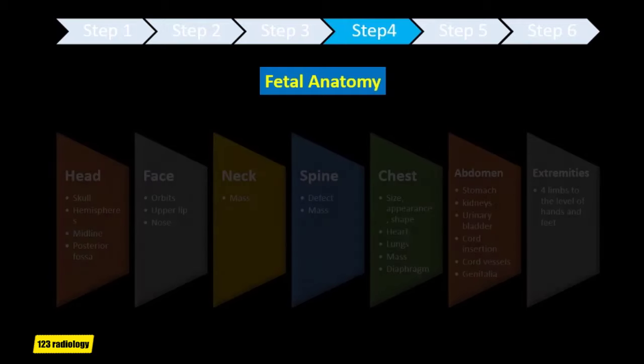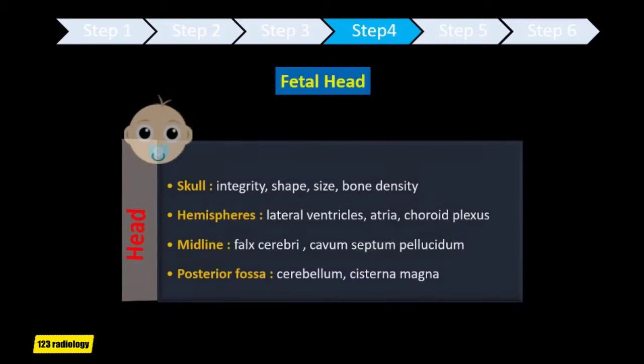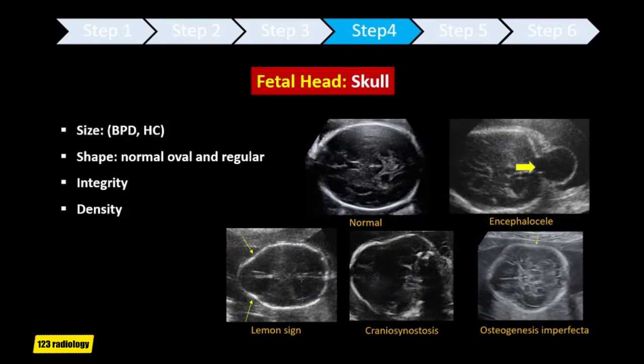Fetal anatomy survey includes the head, face, neck, spine, chest, abdomen, and extremities. For the fetal head, you look at the skull, the hemispheres, the midline, and the posterior fossa. The shape of the fetal head is normally oval and regular, with no defects such as encephalocele, no flattening such as the lemon sign of Chiari II malformation, and no deformations like craniosynostosis. Normally the skull darkens the view of the brain — if brain details are seen too clearly, this may indicate osteopenia, as in osteogenesis imperfecta.